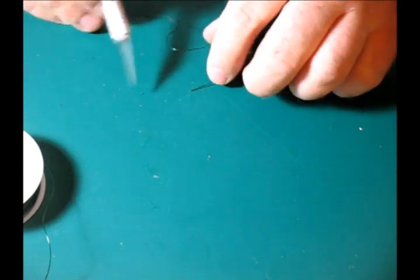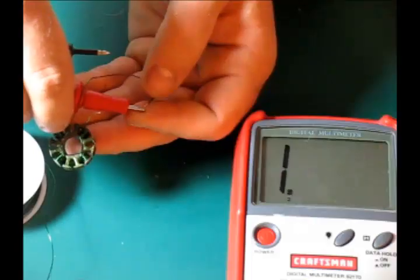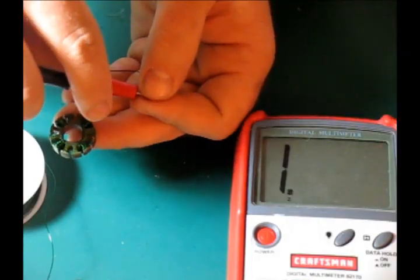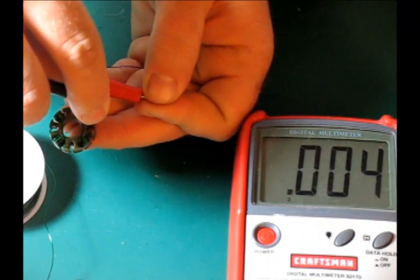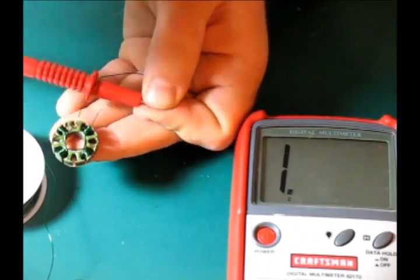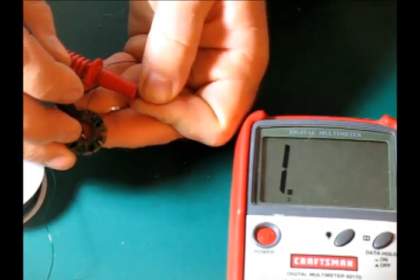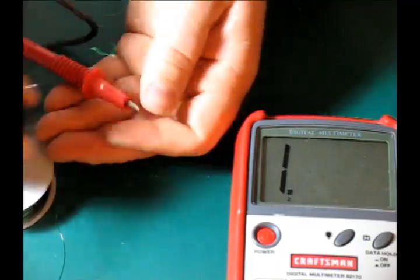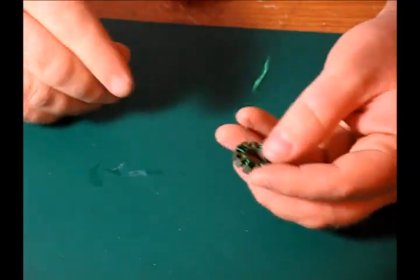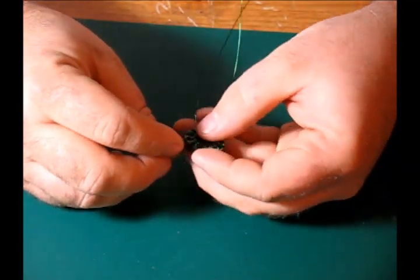Strip a little bit of the insulation from each end of your wire and check for continuity. Make sure that you measure continuity through the entire wire, so you know you don't have a wire break. Afterwards, check to make sure that it is not shorted out against your stator by checking the bare surface of the stator against the bare end of the wire.